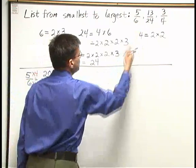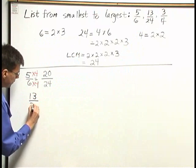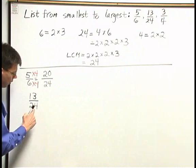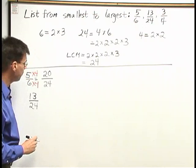My next fraction is 13 24ths. 13 24ths already has the common denominator. So I can just leave it as is. I don't need to change that one.